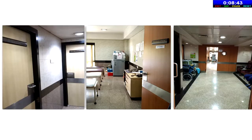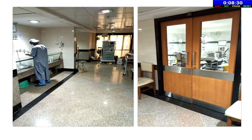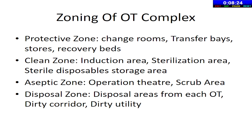The OT complex comprises of changing rooms for surgeons and staff, patient preparation area, patient waiting area, transfer base, clean and dirty corridors, sterilization rooms, store, scrub area, and the main theatre. All these areas are divided into different zones. Zones are areas of varying degrees of cleanliness in which bacteriological count diminishes from outer zone to inner zone.